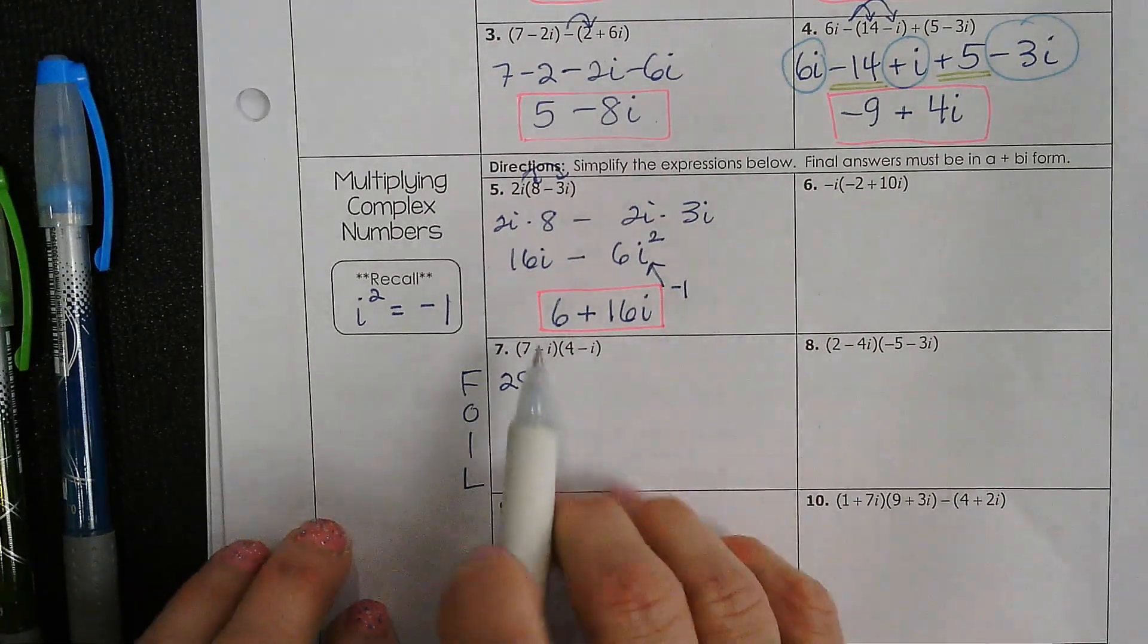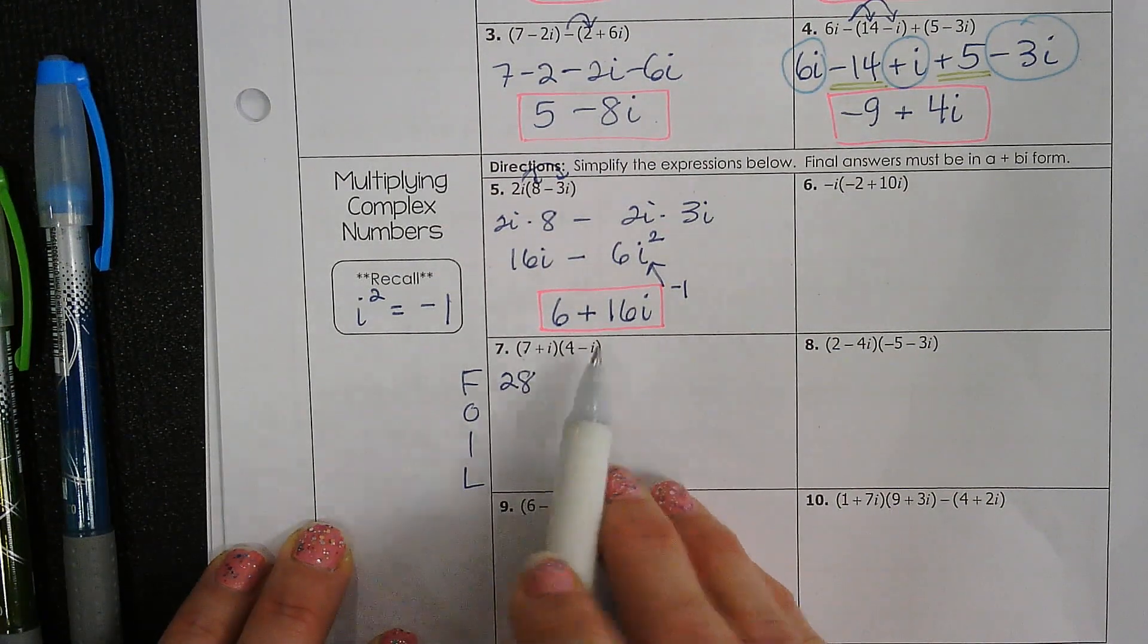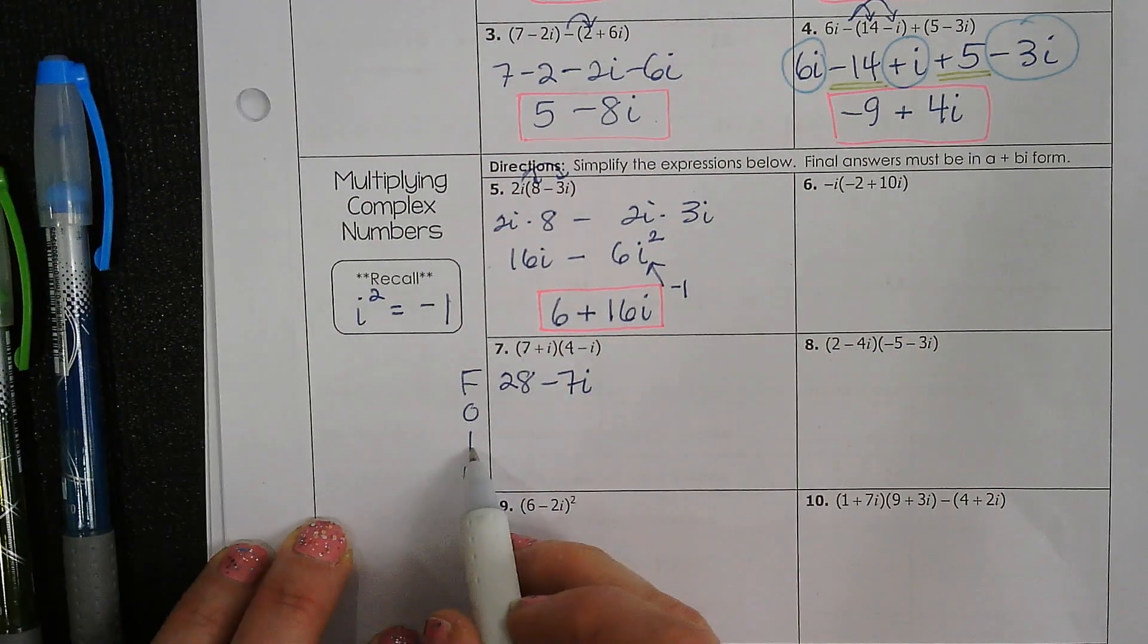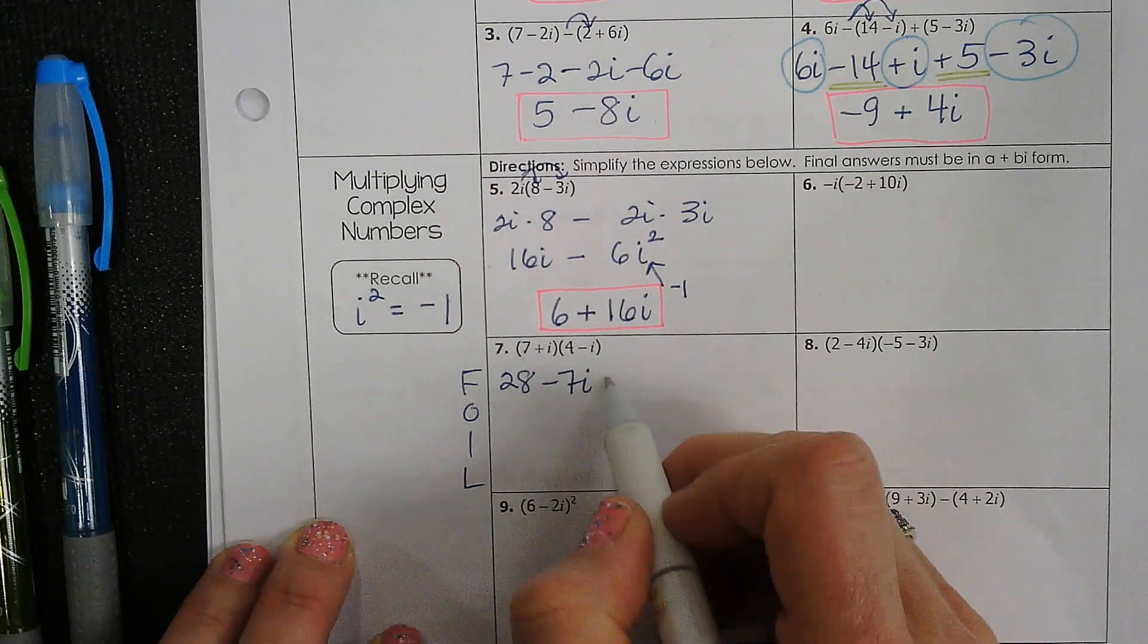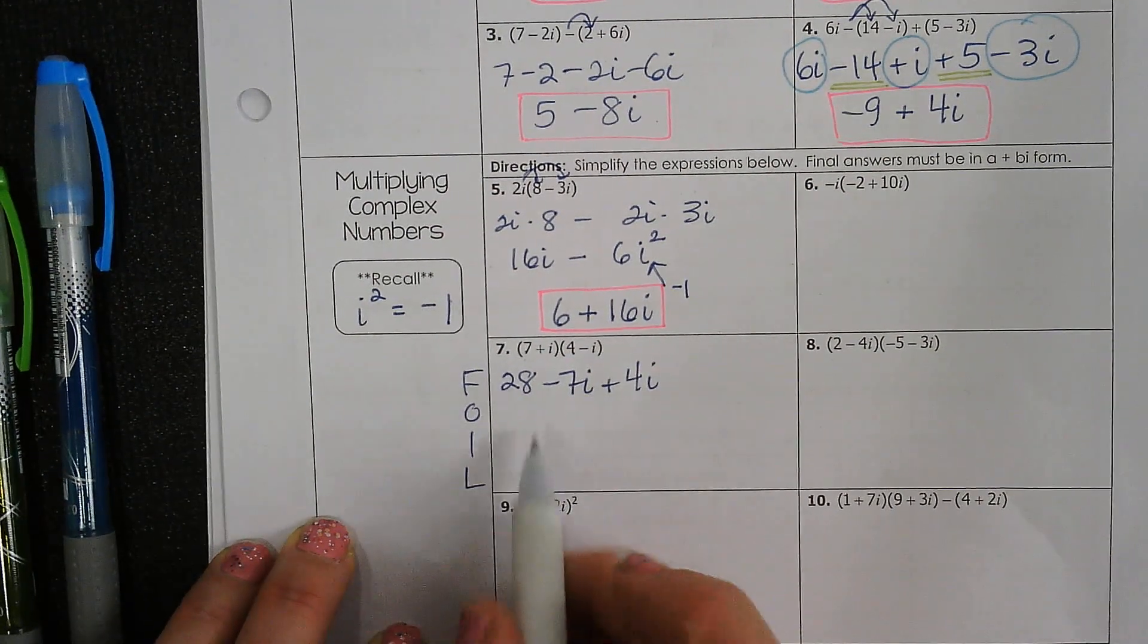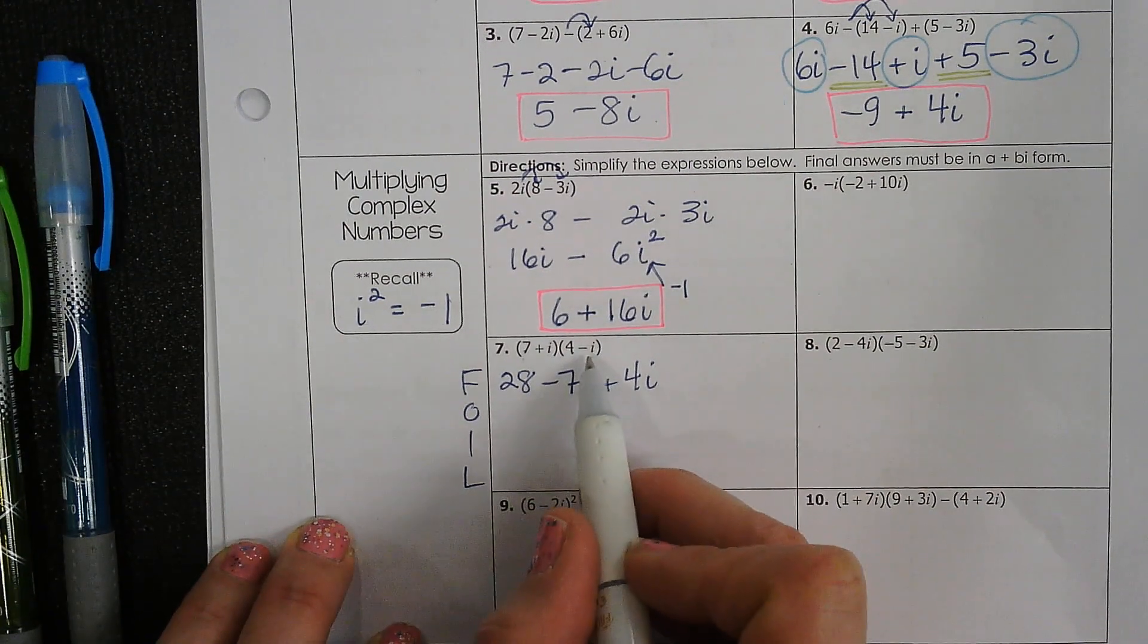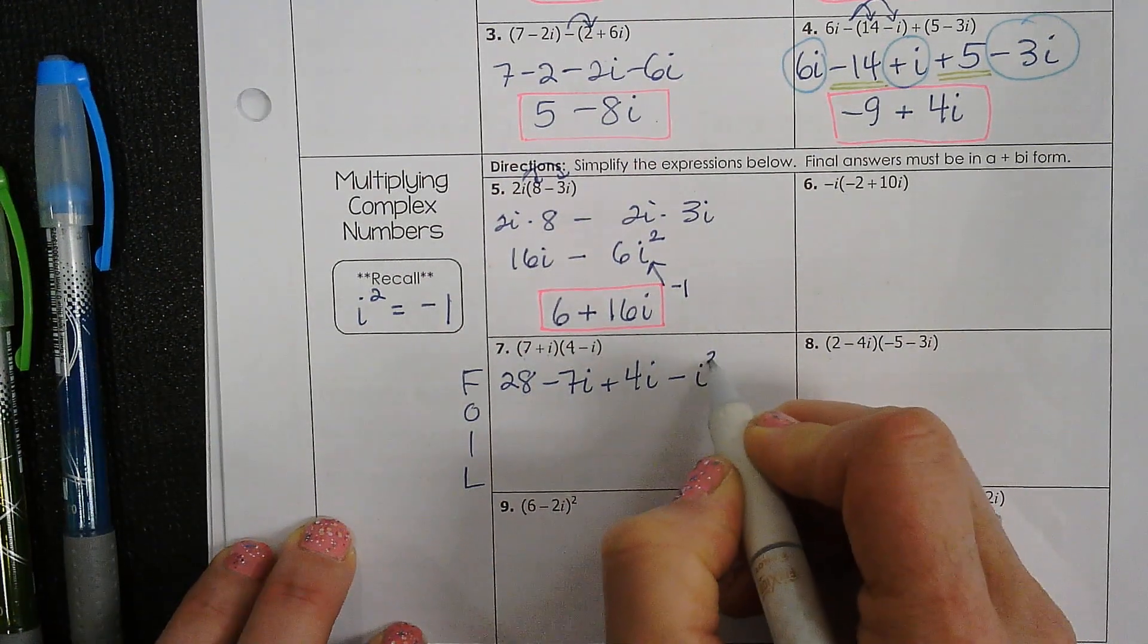The outsides are going to be 7 times negative i. So 7 times negative i is minus 7i. The insides are going to be plus 4i, because those two multiply together. And then the last two are positive i times negative i. So it's minus i squared.